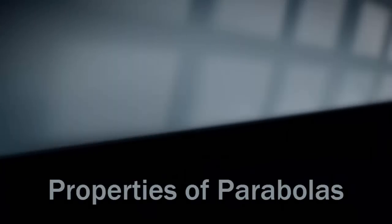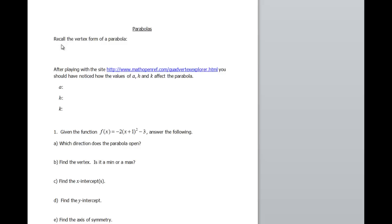Welcome, today we are going to be talking about parabolas. Recall from the previous video that the vertex form of a parabola looks like f(x) or y equals a times x minus h squared plus k. Hopefully you took some time to play with the website mathopenref.com/quadvertexexplorer.html to see how the values of a, h, and k affect your parabola.